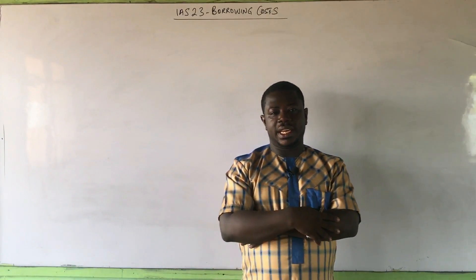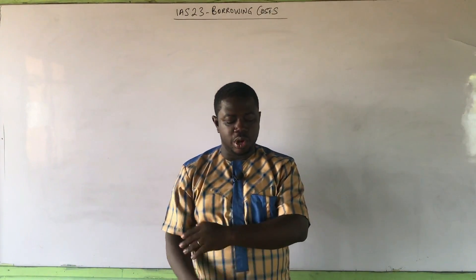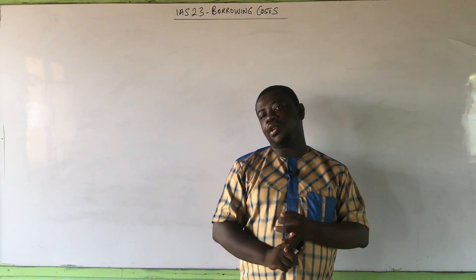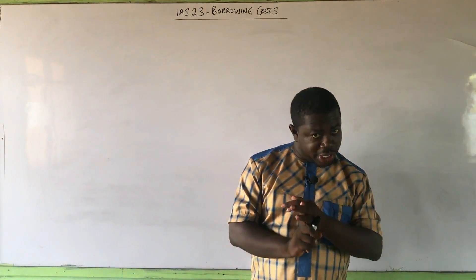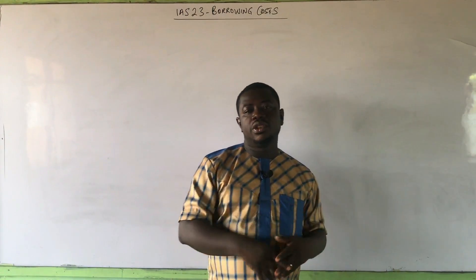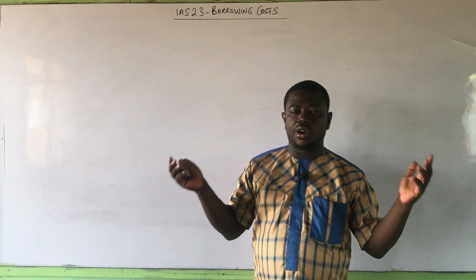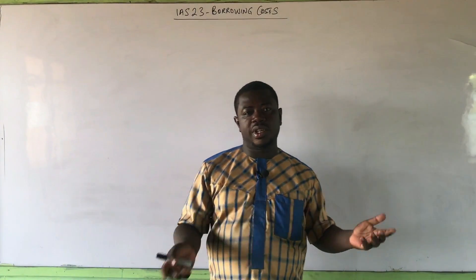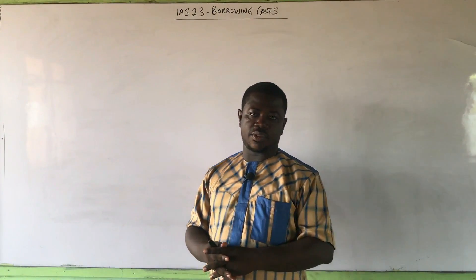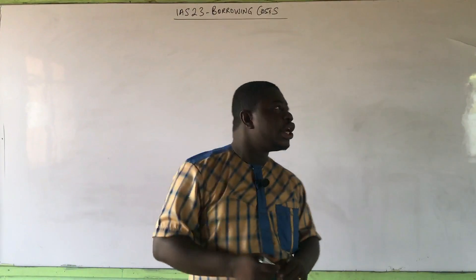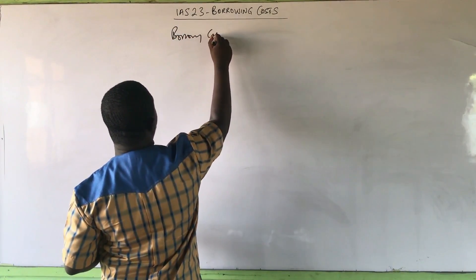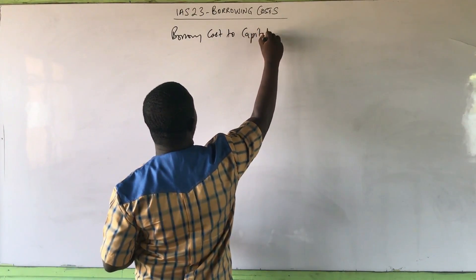Please let us learn and understand the concept very well. We have only two components in this question: the interest and the ancillary cost. Ancillary cost should always be amortized. There is nothing like exchange rate loss, premiums or discounts, or finance charges on finance leases in this question. So we say borrowing costs — we are calculating our borrowing costs to capitalize.